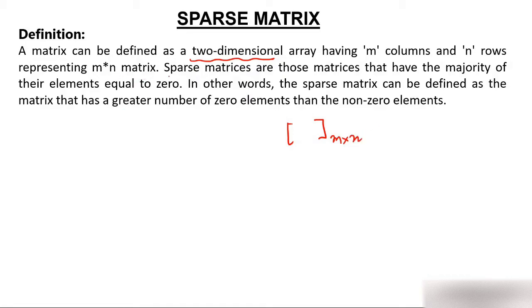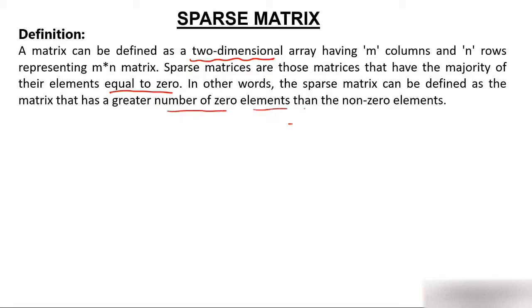Now, what is the sparse matrix? Sparse matrices are those matrices that have a majority of their elements equal to zero. For example, if it's a five cross four matrix, that is, 20 total elements, and 15 of those elements are zero, then this matrix is called a sparse matrix. In other words, a sparse matrix has a greater number of zero elements than non-zero elements.